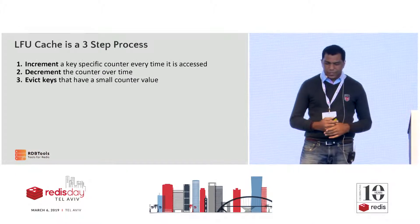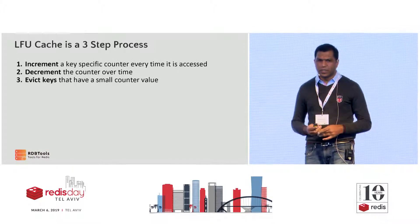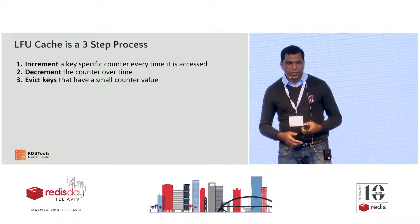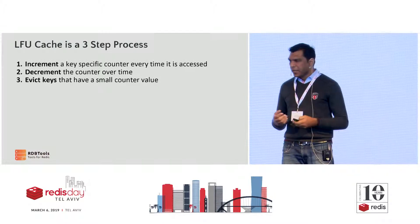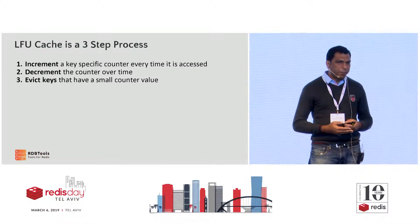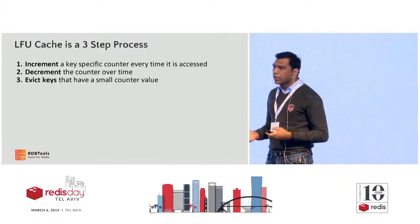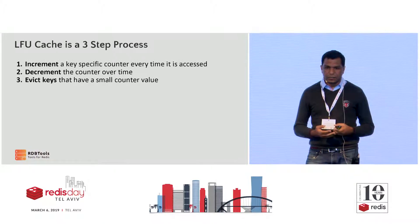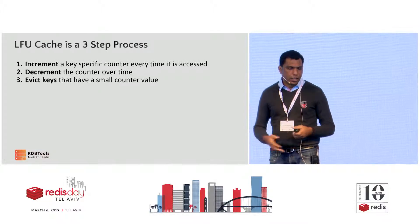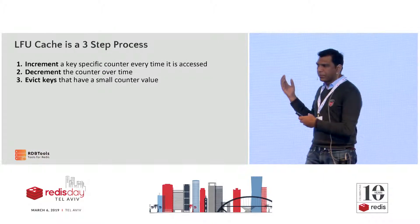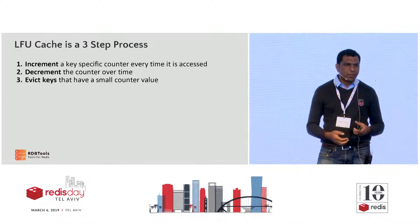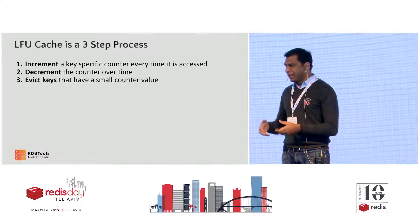The focus of this talk is LFU cache. LFU is least frequently used, which means you want to retain cache entries or objects which are used most frequently. How do you do that within Redis? It's essentially three steps. Every time a key is accessed, you increment the counter. But if you just keep incrementing, at some point your access patterns will change, so you also have to decrement the counter over time. The third step is when Redis runs out of memory, you have to figure out which keys to evict.